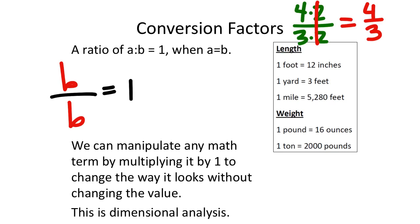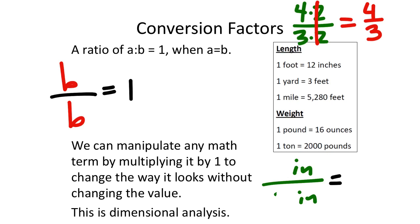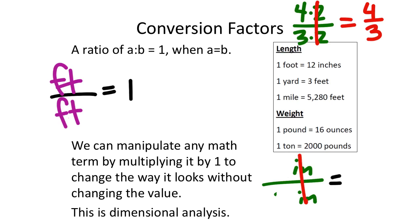Now instead of four times two over three times two, what if it was four inches over three inches? If you have inches divided by inches, those also equal one. So if I took feet divided by feet, I just get one. Notice this result no longer has units — the feet canceled into a one. Where it was four inches over three inches, it would then be four thirds. Whether you're realizing it or not, this is how dimensional analysis allows us to change from one type of unit to another without changing the amount.